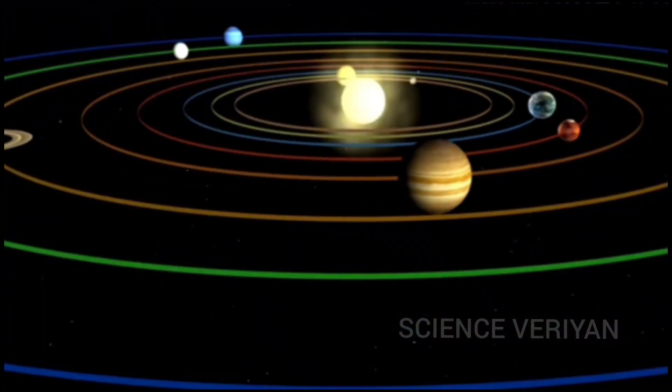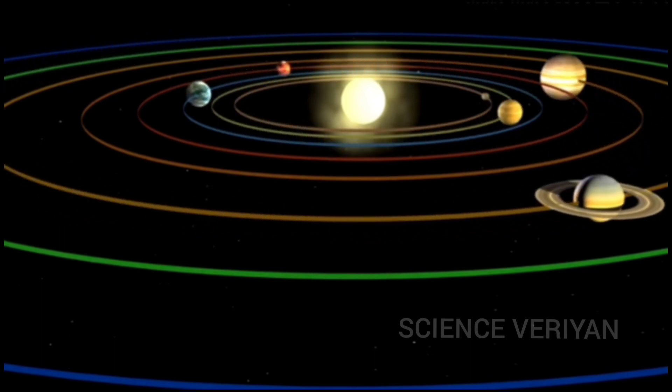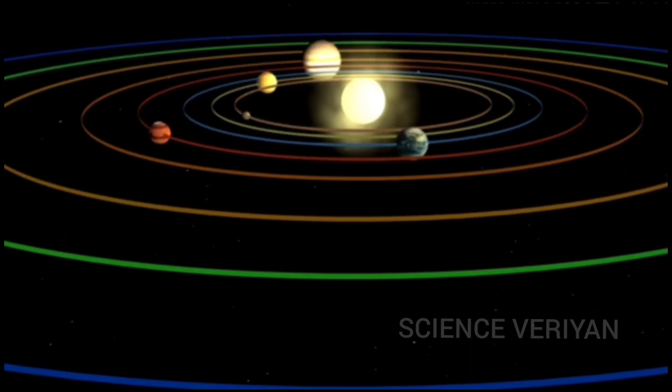Heliocentric theory and geocentric theory. Now, in that video, the sun is in the circular orbit. The sun is in the elliptical orbit. That's how it is.